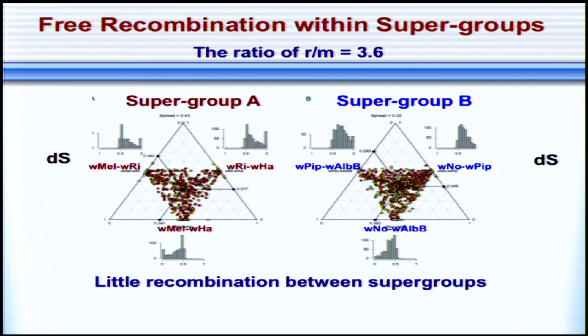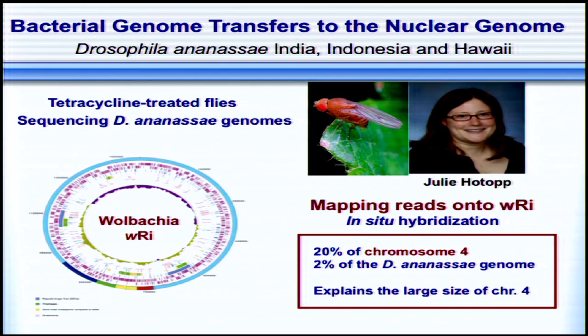Even more interesting, Julie Hotopp discovered that Wolbachia genomes may be transferred into the nuclear genome of their host. We collaborated with her and studied Drosophila ananassae across several strains from India, Indonesia, and Hawaii. We tetracycline-treated the flies, sequenced the whole genomes, and mapped reads back to our Wolbachia genome. We think that maybe 20% of chromosome 4 represents duplicated Wolbachia genomes, corresponding to about 2% of the Drosophila ananassae genome, and this also explains the large size of chromosome 4 in Drosophila ananassae.